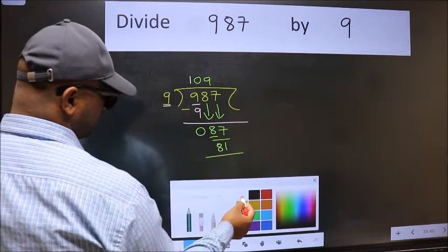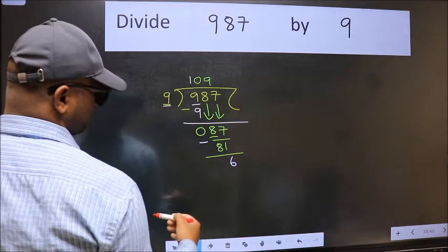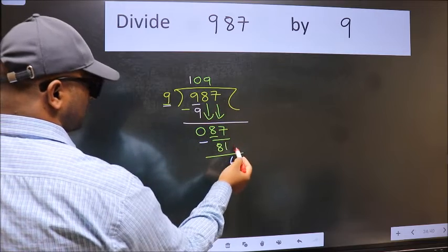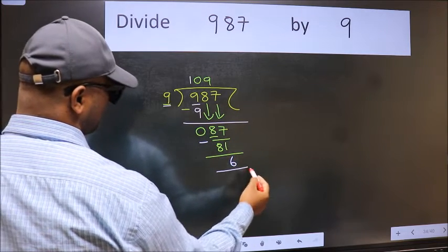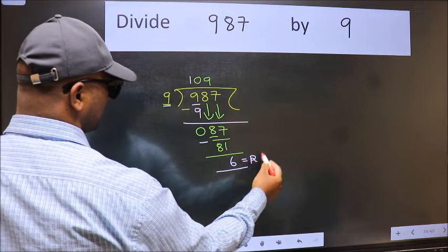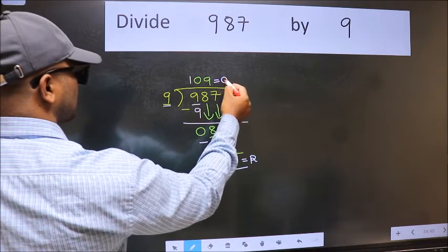Now we should subtract. We get 6. No more numbers to bring it down. So we stop here. This is our remainder and this is our quotient.